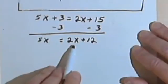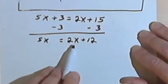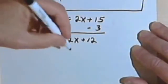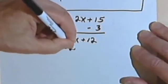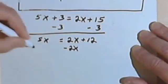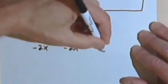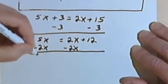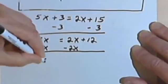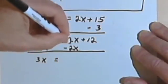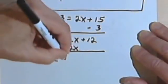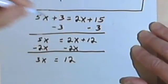Now I want to get rid of the 2x that's on the right side. So once again I can do that by subtraction. In this case I'll subtract 2x, and of course I'll subtract it from both sides. 5x minus 2x is 3x. The 2x and the negative 2x cancel. So I just have a 12 on the right side.